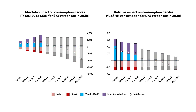On net, as indicated by the white diamonds, the bottom four deciles are better off from the carbon tax reform. The next three deciles are approximately no better or worse off, while wealthier households are worse off on net, but by a fairly modest 1% of consumption.